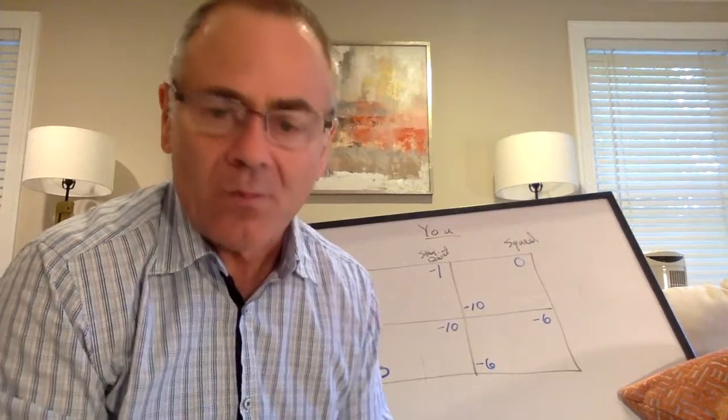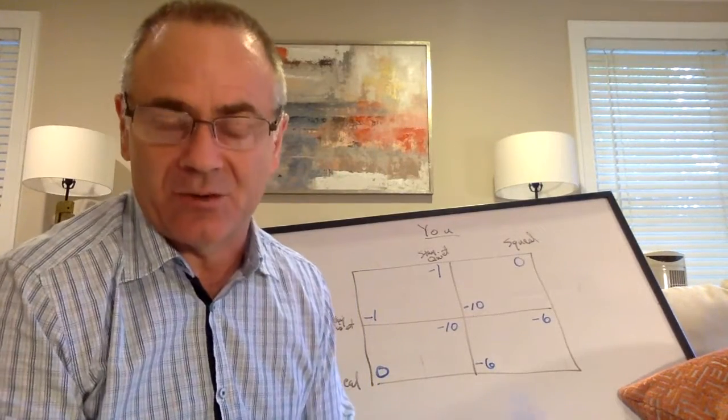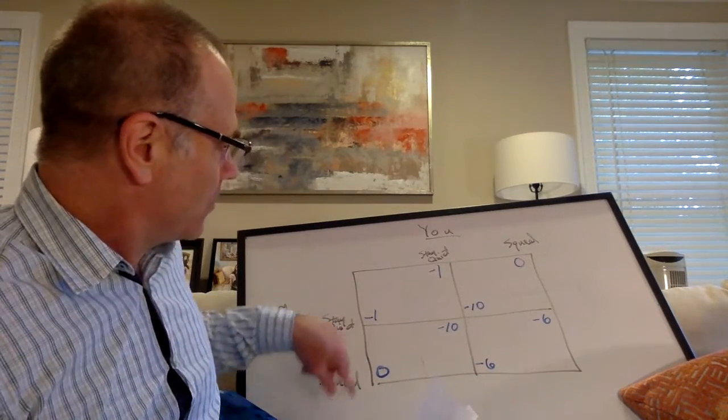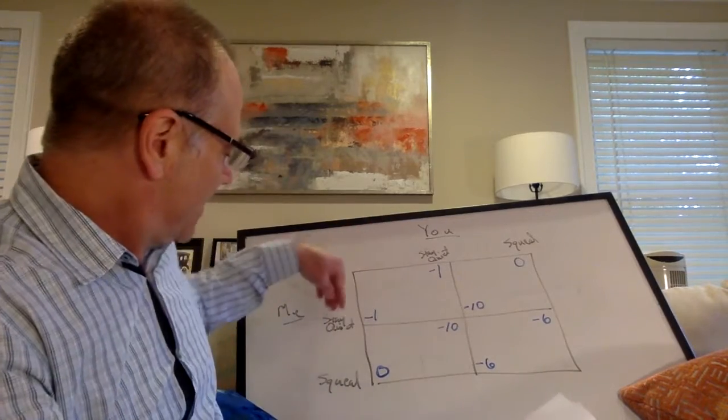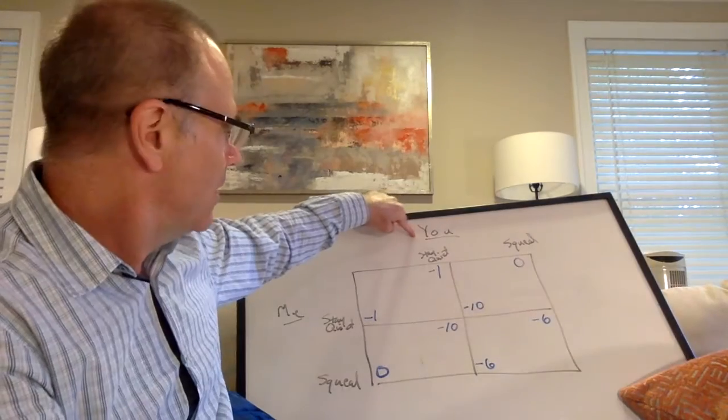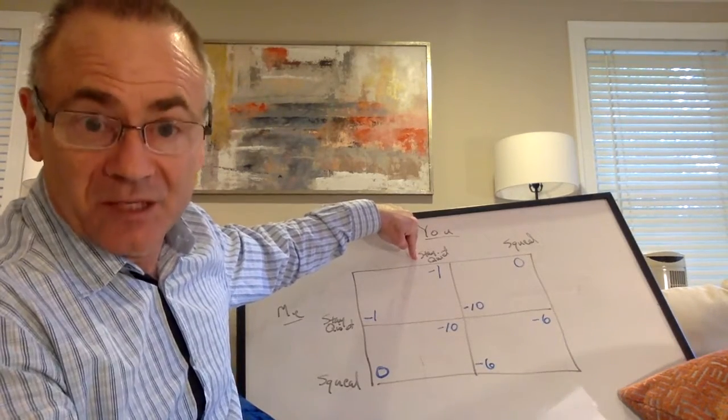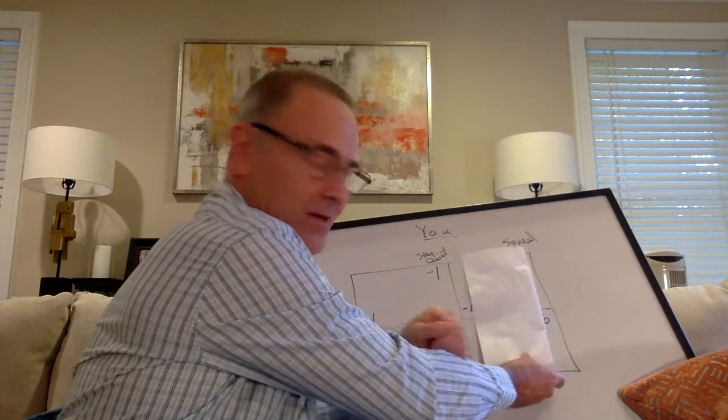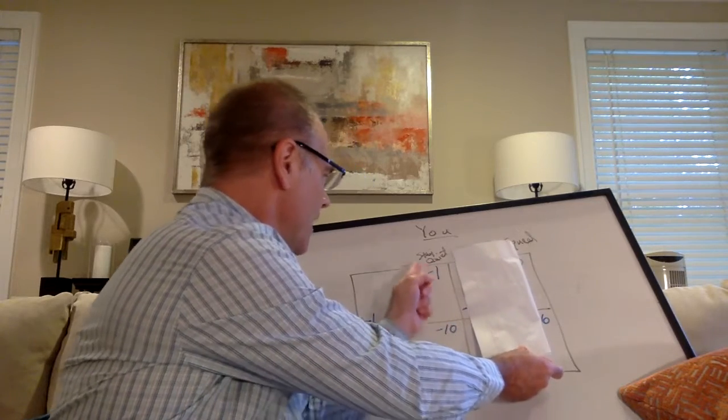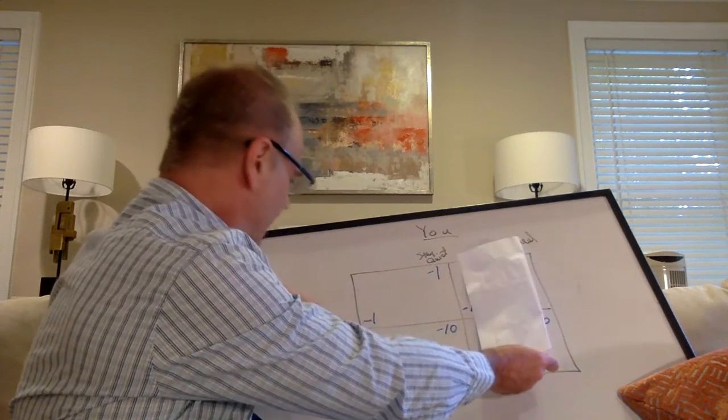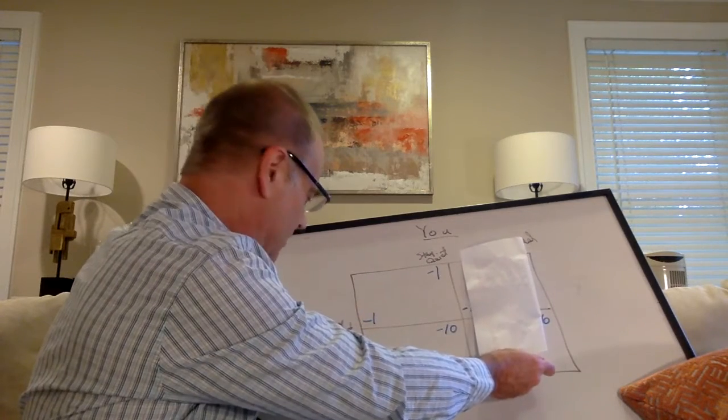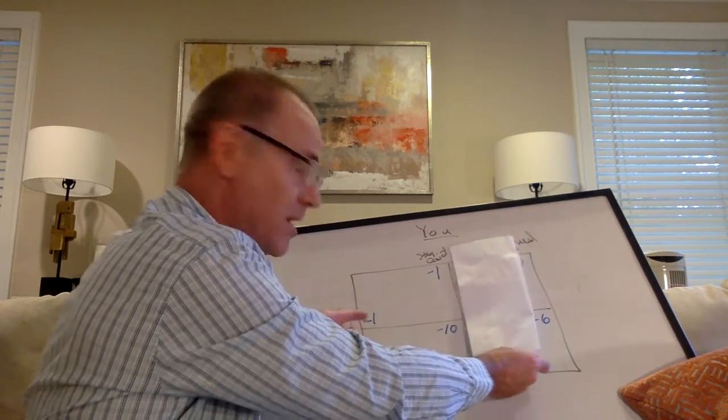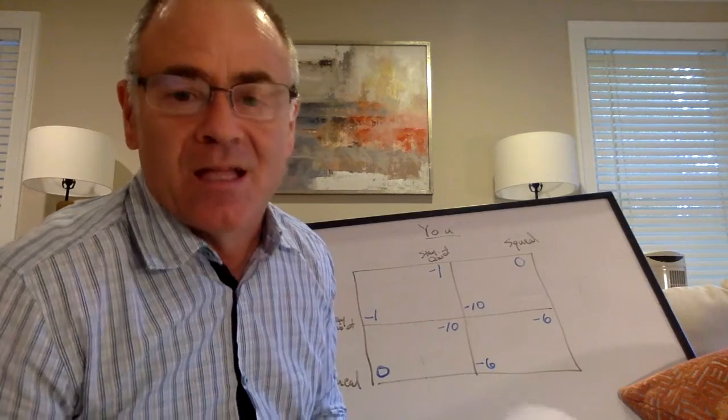Now let's examine what happens in this situation. I'm deciding whether to stay quiet or to squeal. What if my fellow prisoner has stayed quiet? What's my best choice? So let's put up the piece of paper and not even look at this part of the table. I know you're going to stay quiet. If I stay quiet, I get negative one. But if I squeal, I get zero. I'm better off squealing because zero years in jail is better than one year in jail.